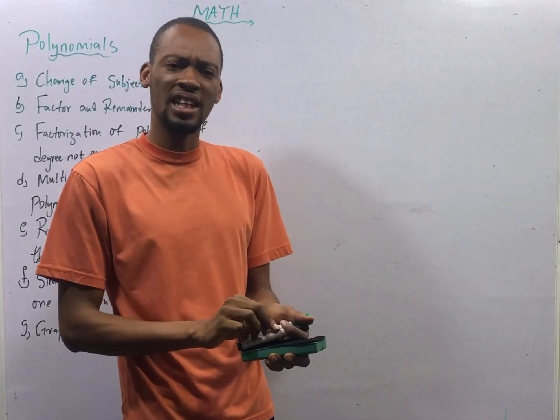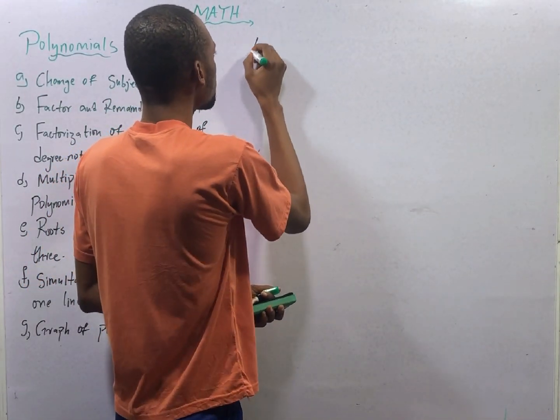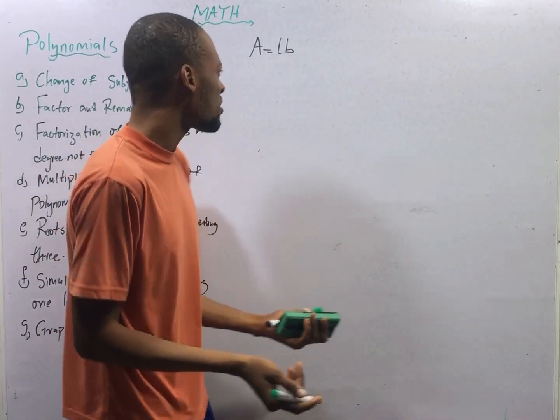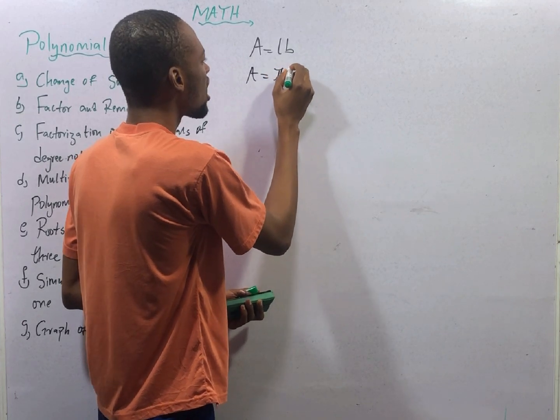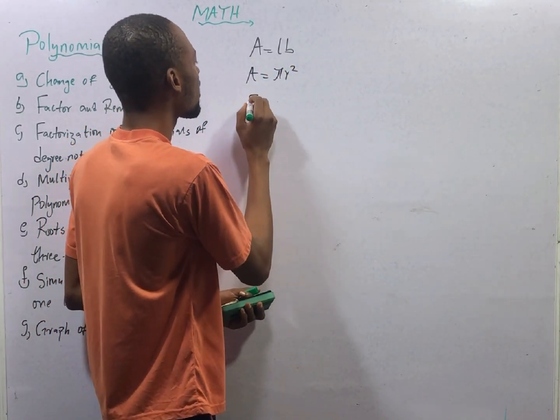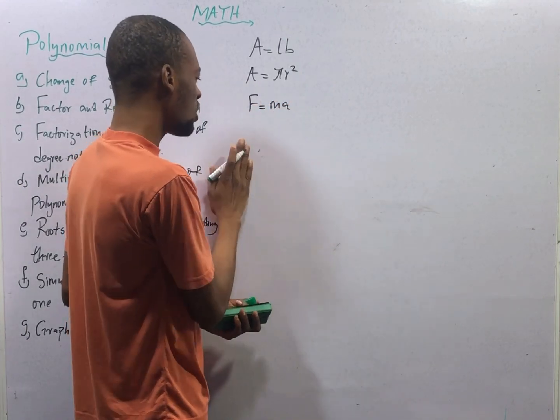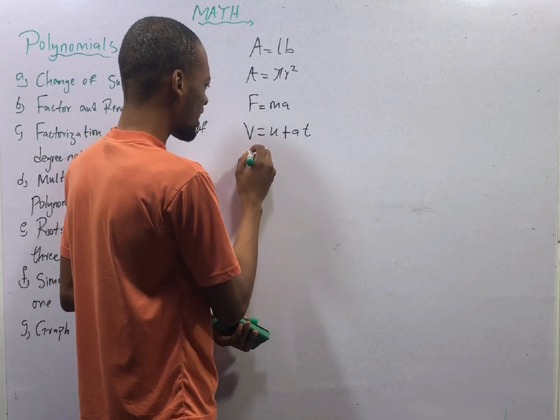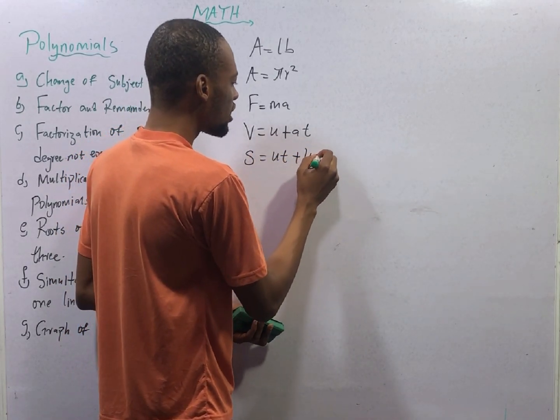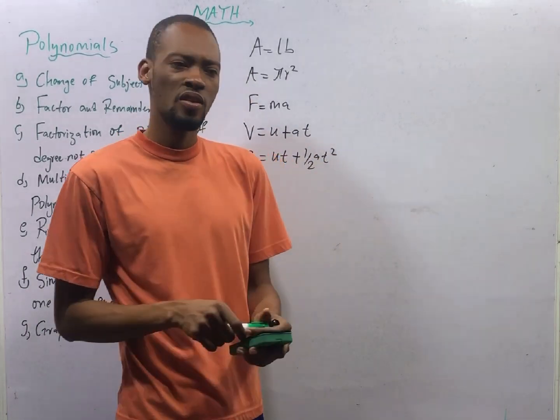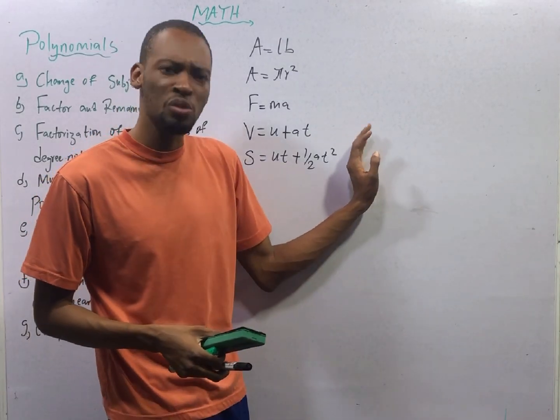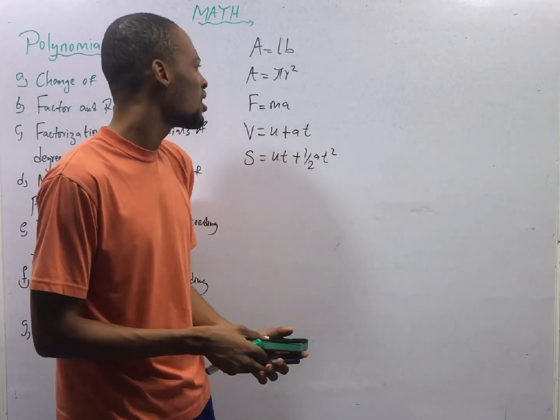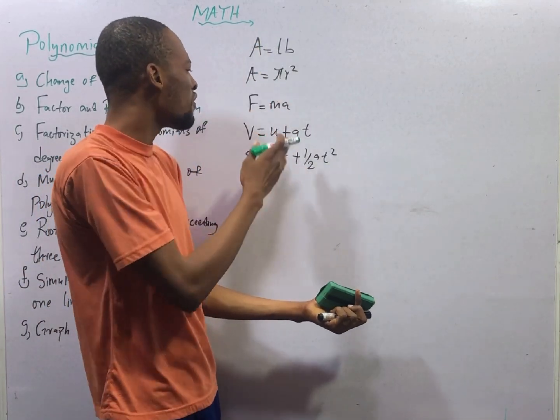In everyday life, we come across things like A equals LB, which means area is length times breadth. You can also see something like A equals pi R squared. We also see equations like F equals MA. Then we see something like V equals U plus AT. Then you see something like S equals UT plus half AT squared. Formulas are rules that make use of mathematical symbols. For every formula, you have the presence of variables and the presence of equal sign.